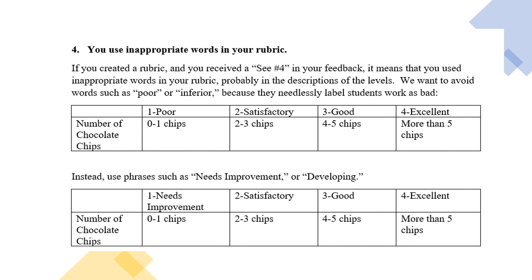If you receive an error number four, it means you used inappropriate words in your rubric. We want to be encouraging to students and not discouraging. Look at the example at the top. This has to do with the labels at the top of the columns. One, poor.